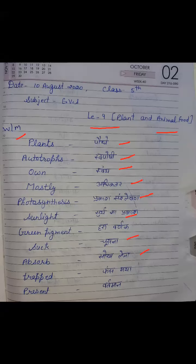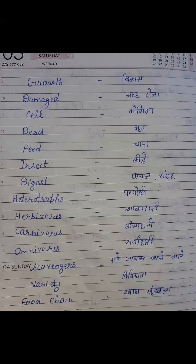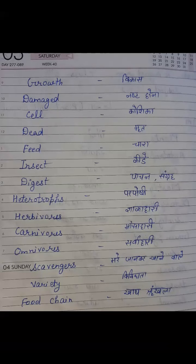Trapped, T-R-A-P-P-E-D. Trapped means phass gaya. Present, P-R-E-S-E-N-T. Present means vartman ya upasthit. Growth, G-R-O-W-T-H. Growth means vikas.